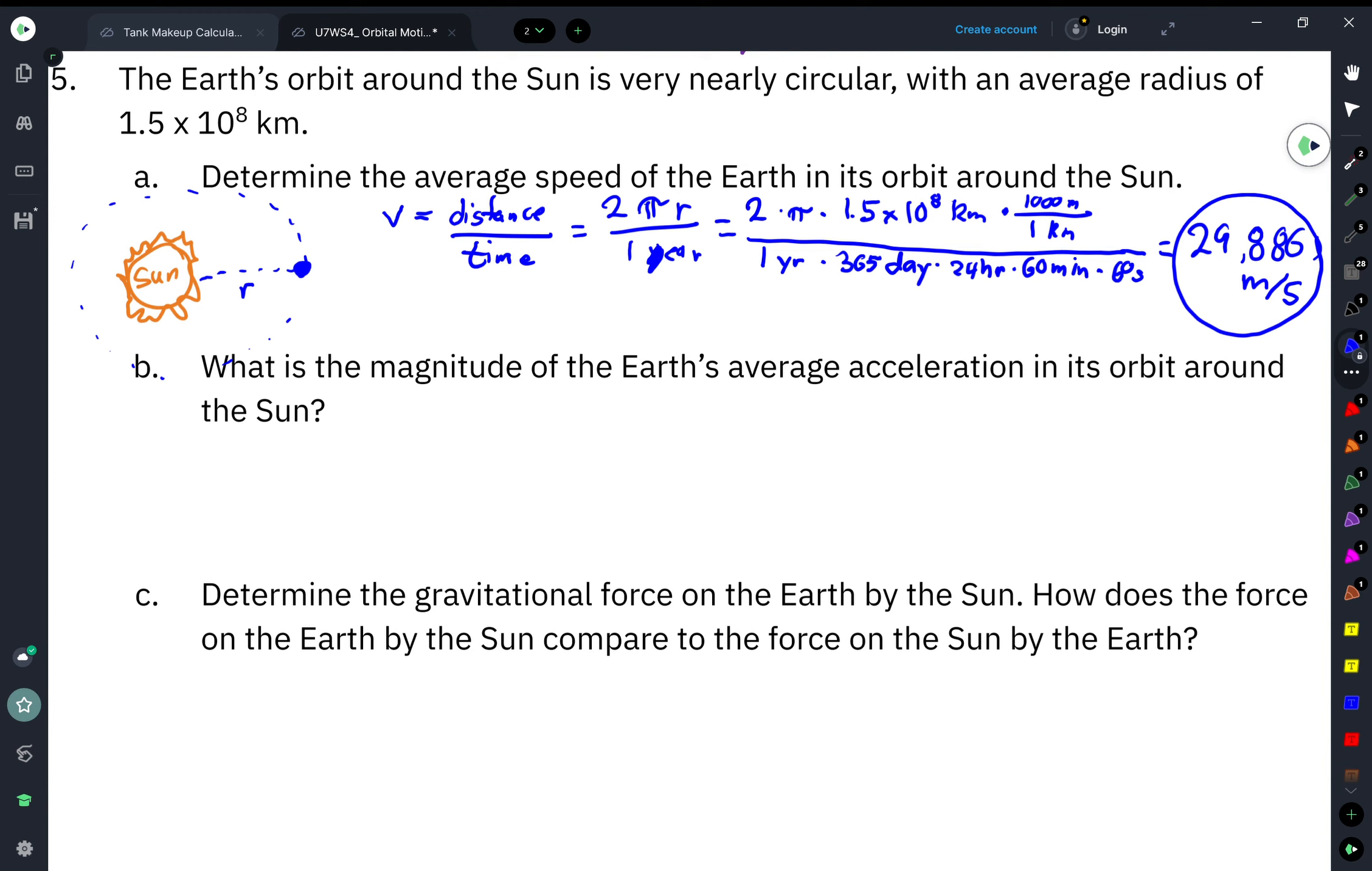Part B, what is the magnitude of the earth's average acceleration in its orbit around the sun? Well, this is going to be a circular orbit, so we can use our equation for circular acceleration or the centripetal acceleration. That can be solved with our velocity squared divided by our radius. We figured out the velocity from the previous part, 29,886 meters per second.